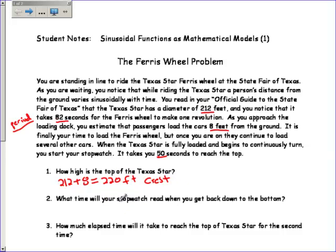Alright, what time will your stopwatch read when you get back down to the bottom? Now remember it took us 50 seconds to reach the top. And once we're at the top, we have to go halfway from top to bottom. And half of a full revolution, half of 82 is 41. I'm going to write top to bottom here next to that 41. So 50 plus 41, that is 91 seconds.